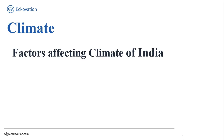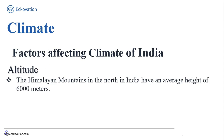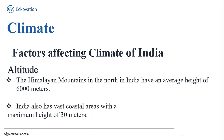Now let's look at the next factor affecting climate of India — altitude. As we know, India has mountains to the north with an average height of approximately 6,000 meters, that is the Himalayan mountains. India also has vast coastal areas with a maximum height of 30 meters. The Himalayan mountains situated in the north prevent cold winds from central Asia from entering the subcontinent, and because of this, the subcontinent experiences comparatively milder winters compared to central Asia.